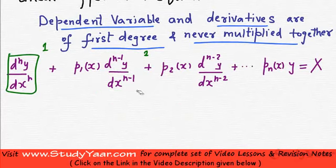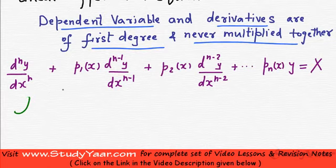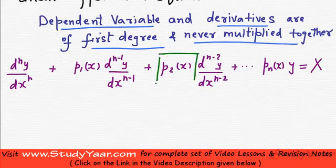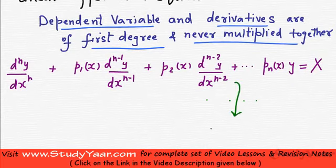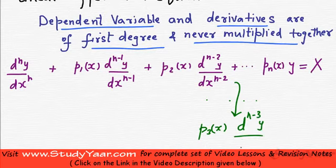A general form of a linear differential equation is as written on the screen. You have d raised to power n y upon dx raised to power n, plus a function of x times d raised to power n minus 1 upon dx raised to power n minus 1, plus another function of x times d raised to power n minus 2 upon dx raised to power n minus 2, and so on, up till you have a function of x times y equal to some function of x.